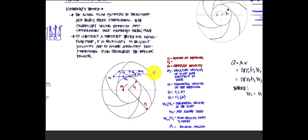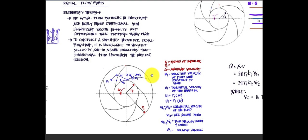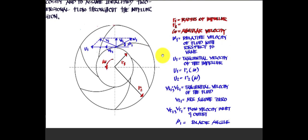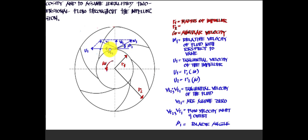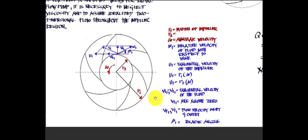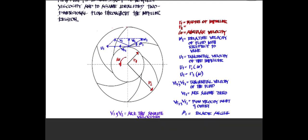Let's have a quick recap of the velocity definitions for the radial flow pump. We have the tangential velocity of the impeller u1 and u2, and the tangential velocities of the fluid Vt1 and Vt2. The absolute velocities are b1 at the inlet and b2 at the outlet. The radial flow velocities are Vr1 at the inlet and Vr2 at the outlet.